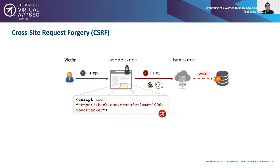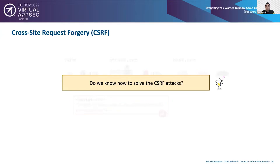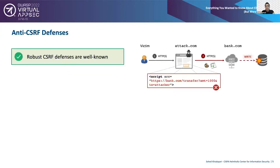This is a classic example of CSRF, a confused deputy security flaw. Because CSRF attacks are an old security problem, the answer to whether we know how to solve them is yes — robust anti-CSRF defenses are well known, and there are indeed a plethora of these defenses.